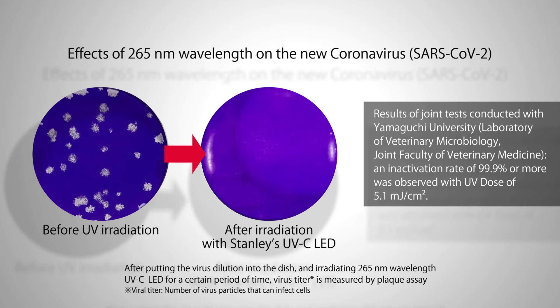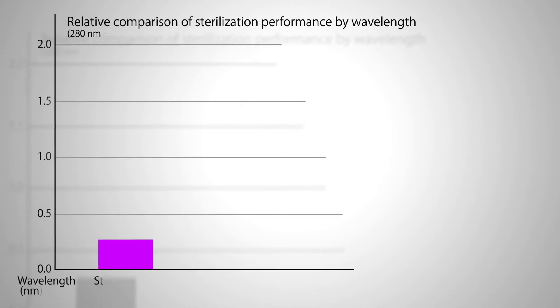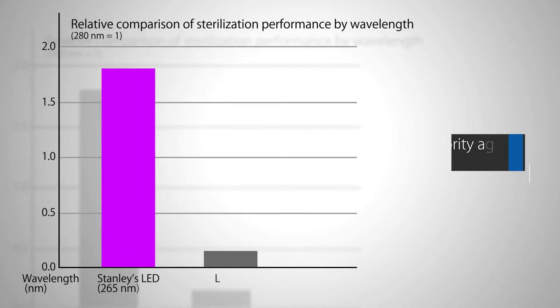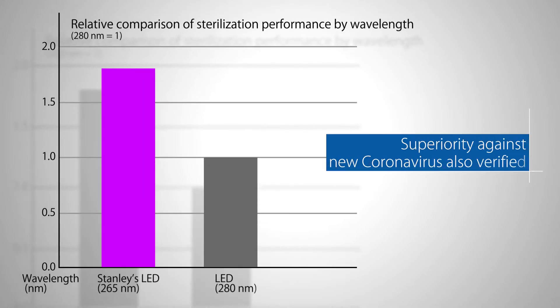When comparing the effectiveness at different wavelengths, the 265 nanometer LED was found to be 1.8 times superior to the 280 nanometer LED.